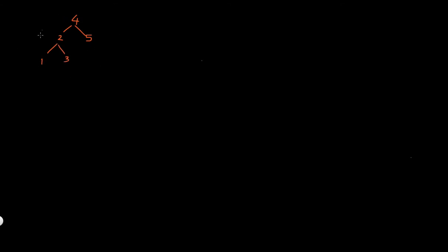Given this binary tree, you're going to write a function so that every left child of this binary tree becomes a right child, and every right child of that binary tree becomes a left child.